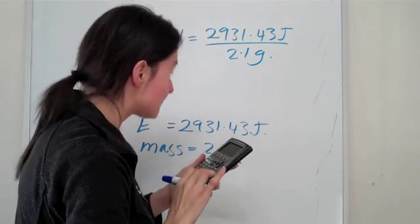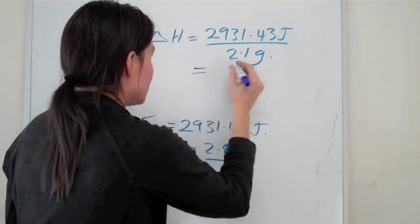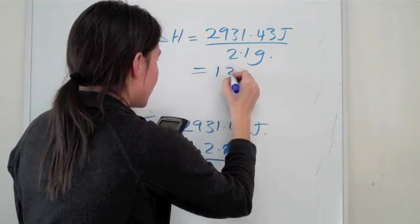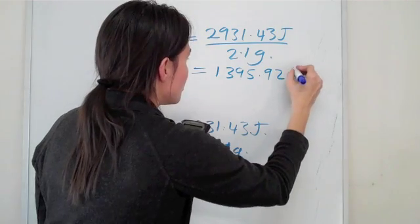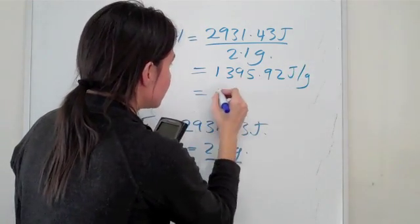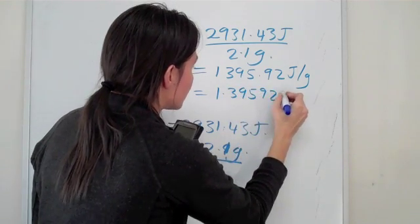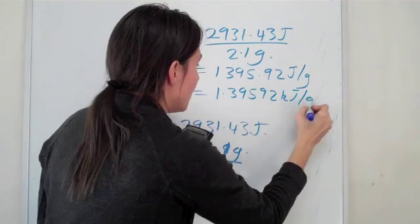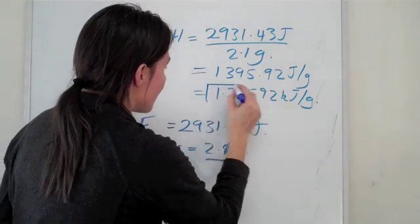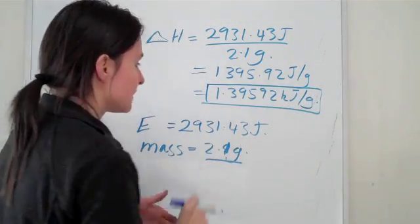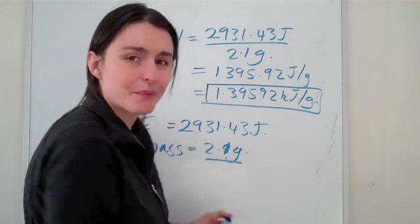So the delta H or the heat of combustion in this case is 2931.43 joules in every, for every 2.1 grams. So if we work that out and divide this by 2.1 grams we will get 1395.92 joules per gram which becomes 1.39592 kilojoules per gram. And then we'll express that to the correct significant figures but this is what your enthalpy will be of the pizza for this particular case.